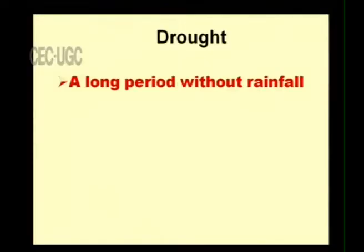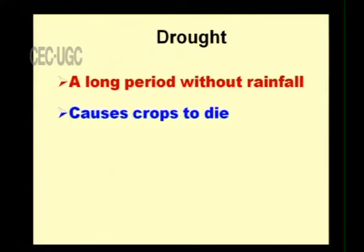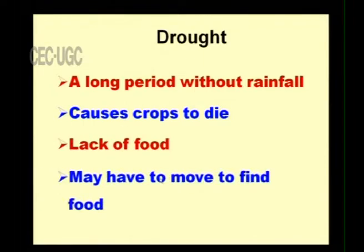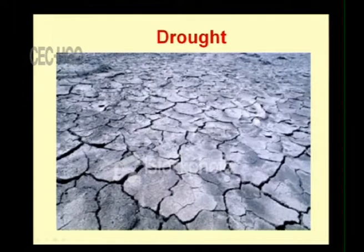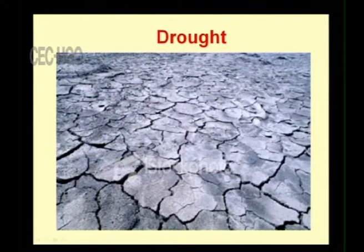Let us examine drought in detail. A long period without rainfall causes crops to die, leading to lack of food so that humans and animals have to move in search of food and water. The land becomes barren with no vegetation and no roots, and the temperature increases drastically. Even the top soil breaks into fragments — that is the net result of drought.